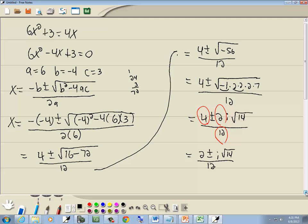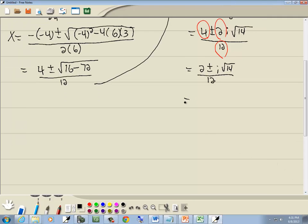Now part of your simplifying for the quadratic formula is, if you have an i, split the real parts separate from the imaginary. So I'll put 2 over 12 plus or minus square root of 14 over 12 with an i to the side. Now 2 over 12 reduces, so it becomes 1/6 plus or minus square root of 14 over 12 i. And that's our answer.